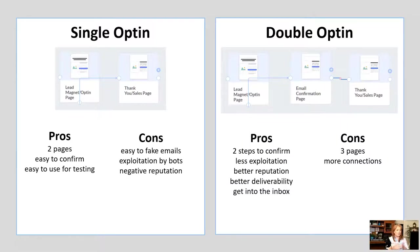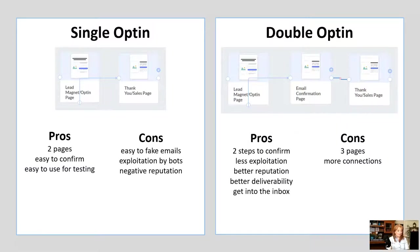There are some pros and cons to single opt-in. The first pro is that it's only two pages — the lead magnet or opt-in page and the thank you page or sales page. It's also really easy for them to confirm; all they do is fill out the opt-in form and they go into that subscriber list as confirmed. And for testing purposes, a single opt-in is great because you don't have to keep going back to your email, checking it, confirming, and making sure everything's working. Very easy for testing.